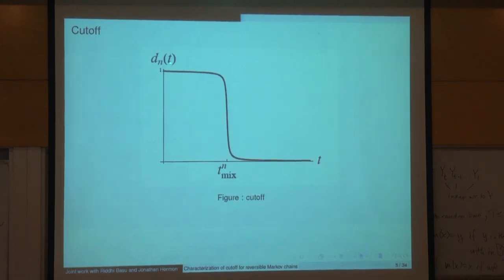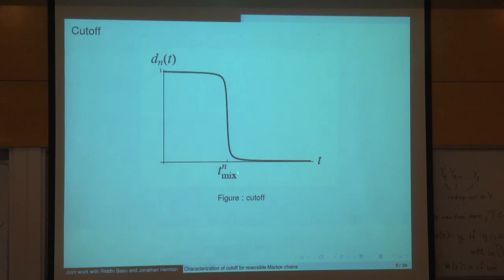In terms of the behavior of the distance to stationarity, a cutoff represents a sharp drop in this distance. Around the point t_mix in an interval which is negligible, you go from total variation distance near 1 to total variation distance near 0. That's what cutoff means, and the width of this interval is the window size.